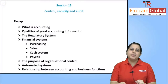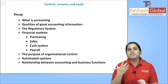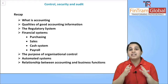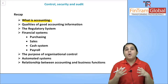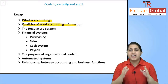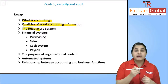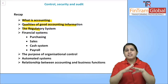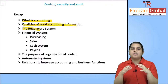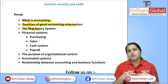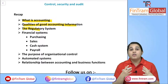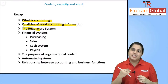In our previous session, we talked about accounting — what was the role of accounting, basically recording of transactions, analyzing them and summarizing them. We also talked about the qualities of good accounting information — that it needs to be reliable, complete, accurate and so on. We also studied the regulatory system, which includes accounting standards, GAAP, European Union, IASB, and how IFRS is issued.